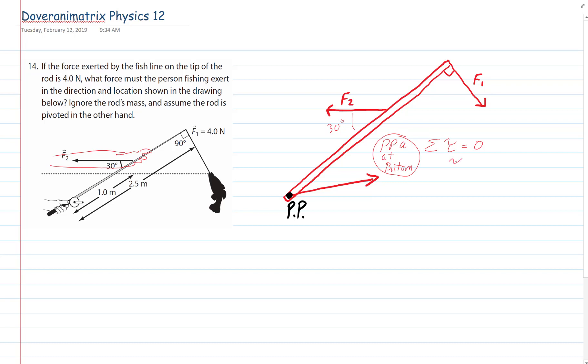So the torques clockwise is equal to torques counterclockwise. So the torque clockwise is the torque caused by F1. And the torque counterclockwise is the torque caused by F2.